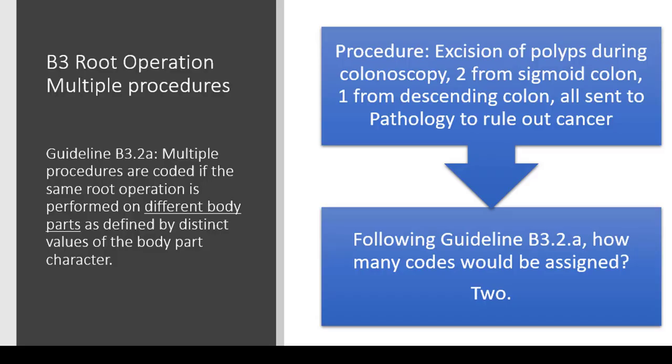The next few guidelines talk about multiple procedures. Guideline B3.2a: multiple procedures are coded if the same root operation is performed on different body parts, as defined by distinct values of the body part character. The procedure is excision of polyps during a colonoscopy — two from the sigmoid colon and one from the descending colon, all sent to pathology to rule out cancer. Following that guideline, how many codes would be assigned? The answer is two.